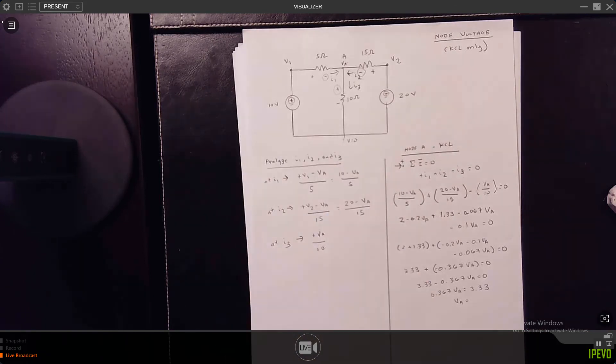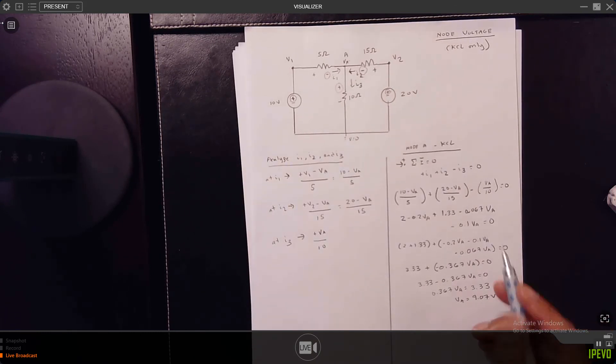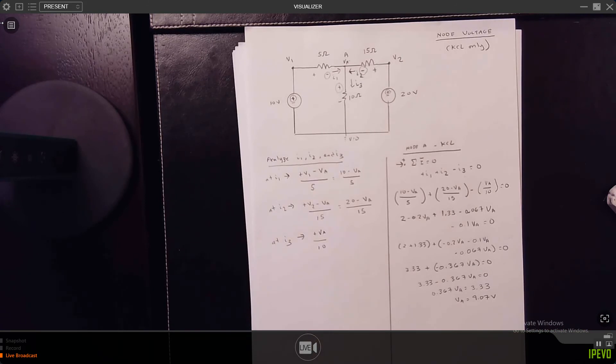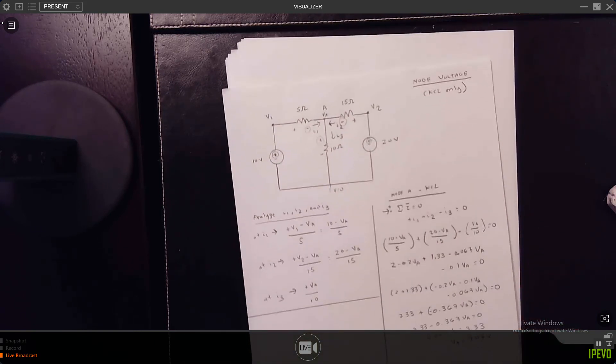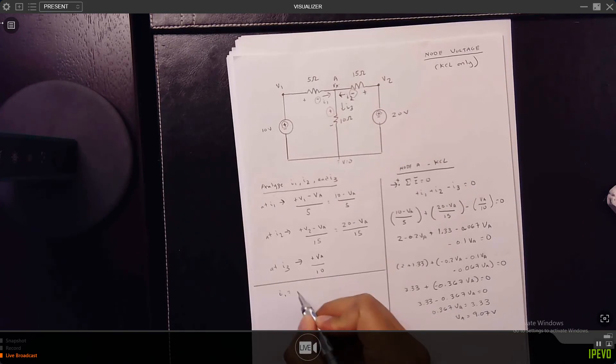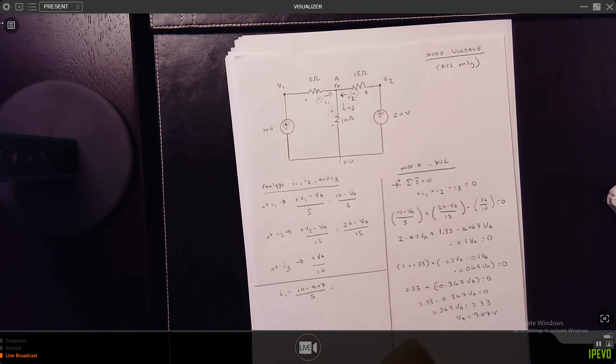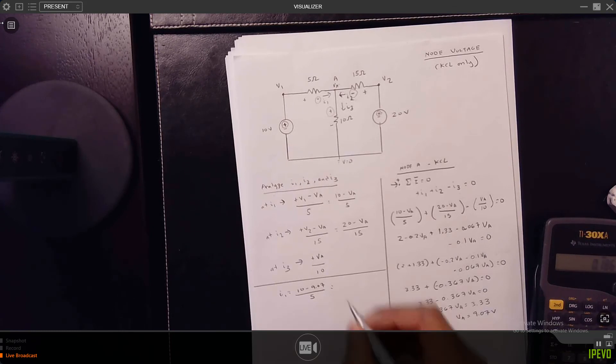How do we handle this? We simply plug it in. So the problem becomes very simple. I1 is equal to 10 minus 9.07 over 5. So 10 minus 9.07 equals 0.93 divided by 5 is 0.186 amps. Now your answers may be slightly different due to the decimal places, but it should be close.